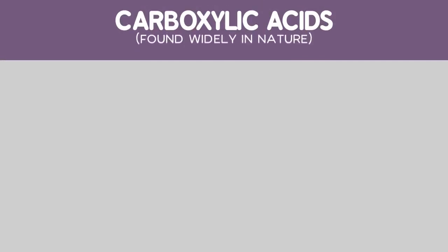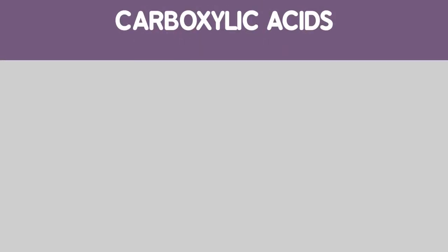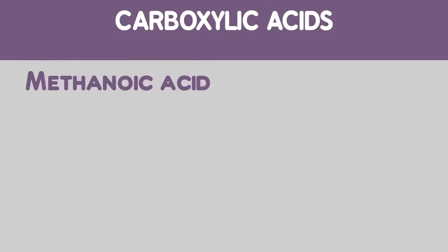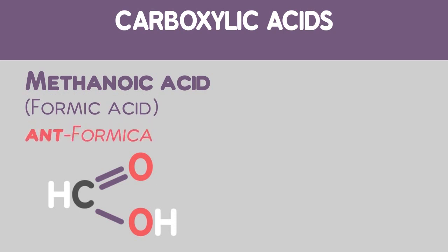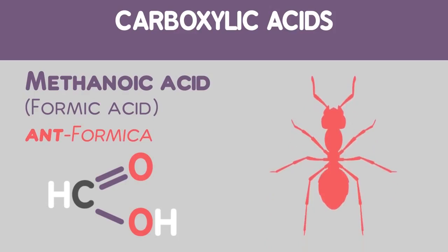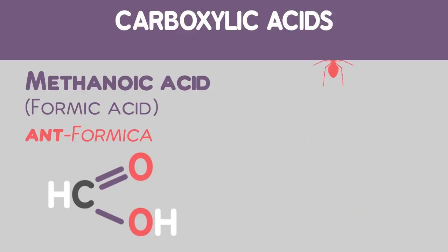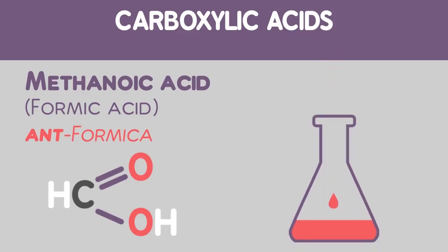Carboxylic acids are found widely in nature. Here are three examples. First up, methanoic acid. Methanoic acid is commonly called formic acid, from the Latin for ant, formica, as it is the compound red ants inject into their prey. It was first isolated by distilling red ants.